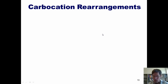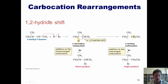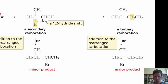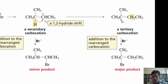When carbocation intermediates exist in a reaction mechanism, as they do for most additions to alkenes, those carbocations can undergo rearrangements if doing so creates a more stable carbocation intermediate. For example, if electrons come out to grab a proton placed on the external carbon, giving an internal secondary carbocation, a 1,2-hydride shift — where this hydrogen takes these two electrons, walks next door, and plugs them into the hole — places the carbocation at a tertiary carbon. Bromide addition to this tertiary carbocation then gives the major product.